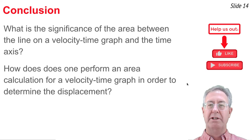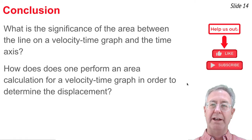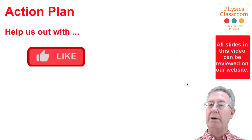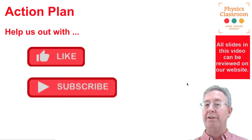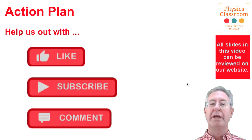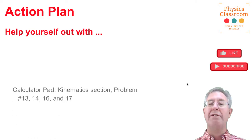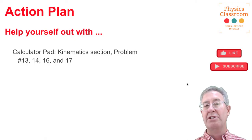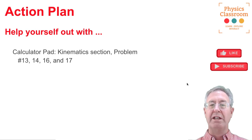We've accomplished our objectives: the area between the line on a VT graph and the time axis represents displacement, and we've learned to calculate it using rectangular, triangular, or trapezoidal area formulas. For the action plan: visit the Physics Classroom website's Calculator Pad and try questions 13, 14, 16, and 17 in the kinematics chapter. Each question includes answers and an audio-guided solution.